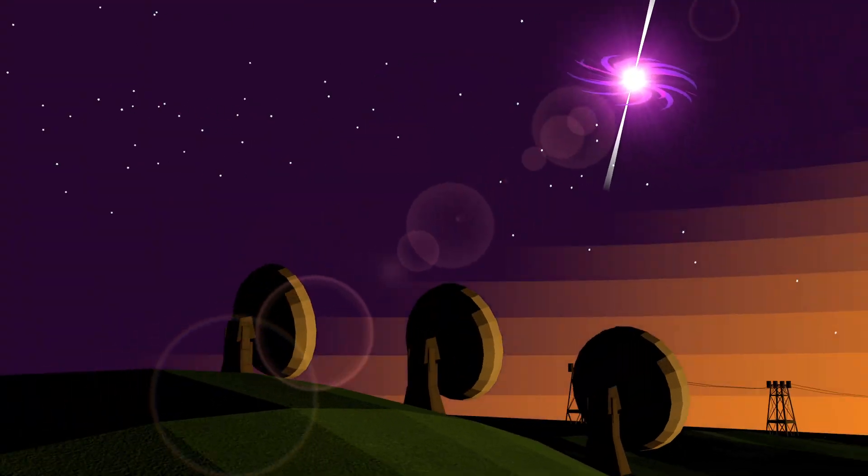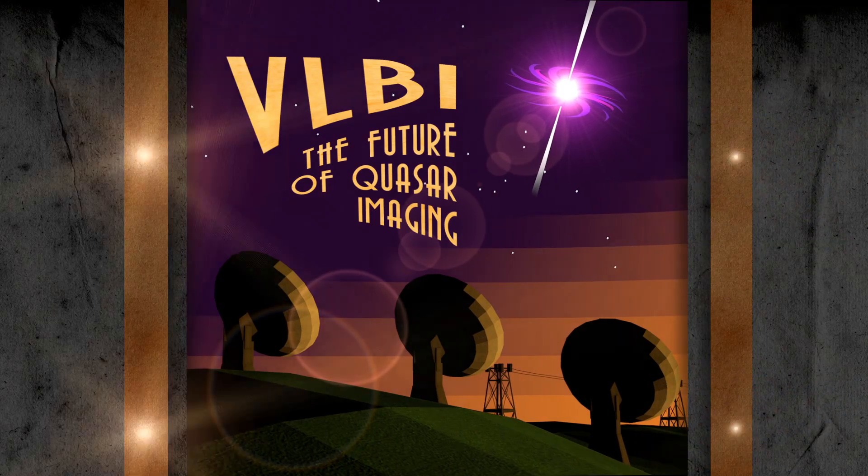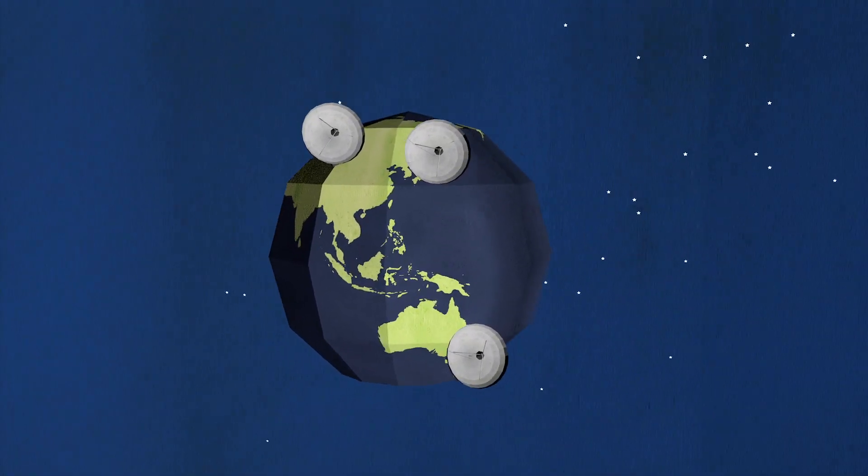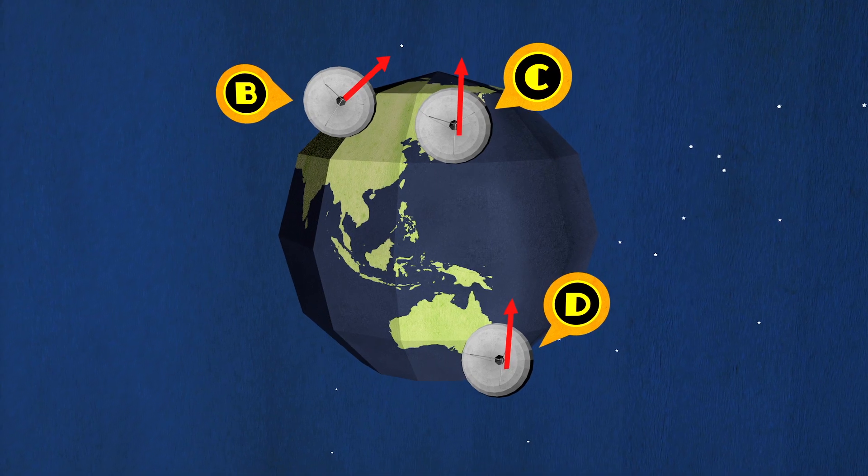VLBI was originally developed back in the 60s to take pictures of quasars. Early on, though, someone realized that because quasars never really move, you could use them as reference points, throw the whole process in reverse, and figure out how all the telescopes were moving relative to one another.